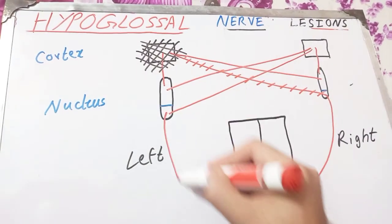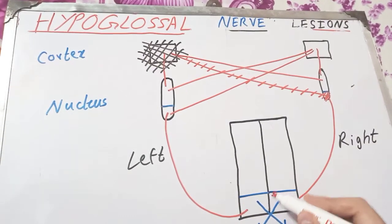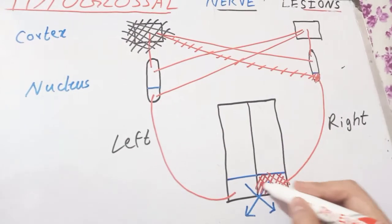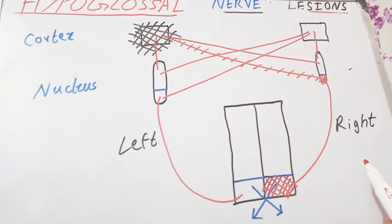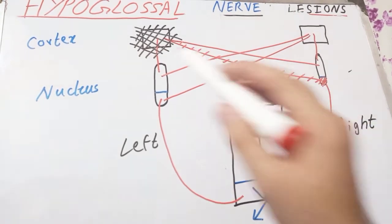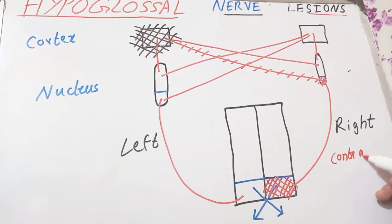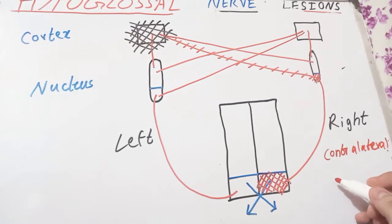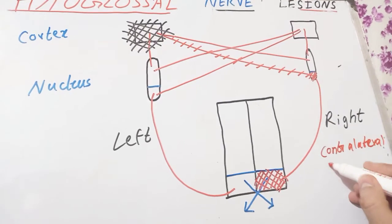The right-sided genioglossus is paralyzed, so the tongue will be moved by the left-sided genioglossus — which is intact — towards the right side. The tongue will deviate towards the right side. Since the right side is the contralateral side, in the case of an upper motor neuron lesion there will be contralateral deviation of the tongue. Remember: lower motor neuron lesion produces ipsilateral deviation, and upper motor neuron lesion produces contralateral deviation.